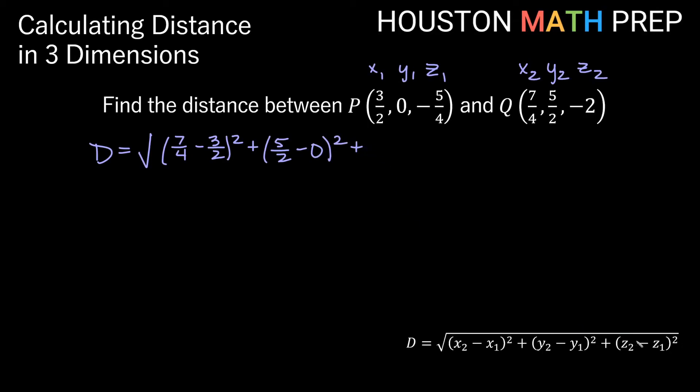plus z2 minus z1 squared. So z2 is -2, minus z1, so minus negative 5/4 here, all of that squared. We'll take the square root of all of that. So here now what we'll want to do in each of these is make sure we have a common denominator if we need one.